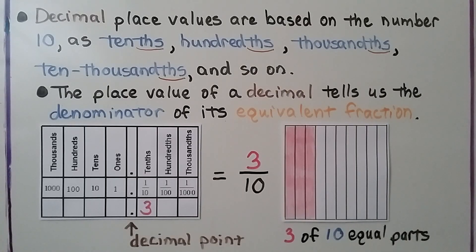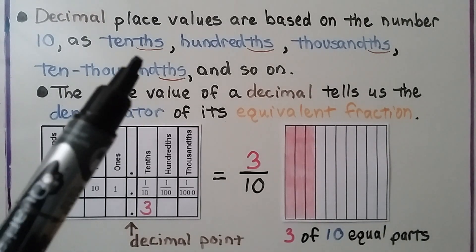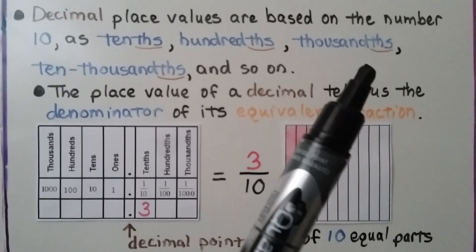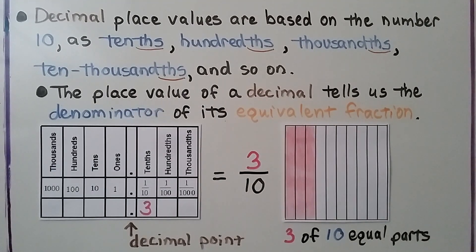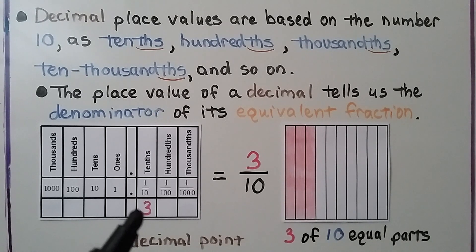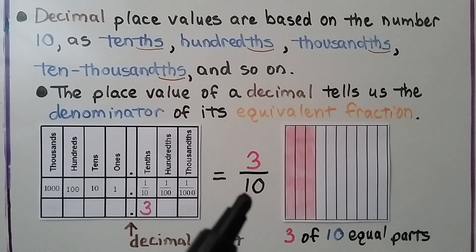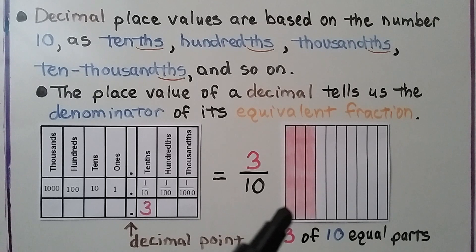Decimal place values are based on the number ten — tenths, hundredths, thousandths, ten-thousandths, and so on. The place value of a decimal tells us the denominator of its equivalent fraction. For example, three-tenths tells us the denominator is ten — we have three of ten equal parts.